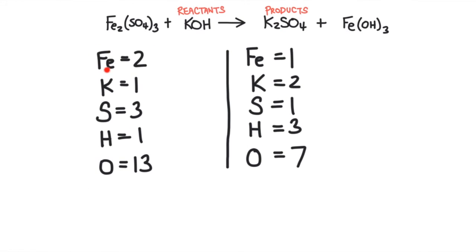We'll start with iron, because iron is a metal. There are two irons on the reactant side, and then only one on the product side. So I'm going to change the coefficient on this side to a two. Now that's going to double everything in this compound.